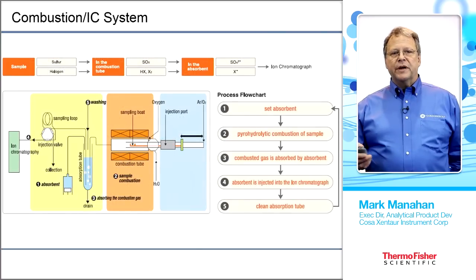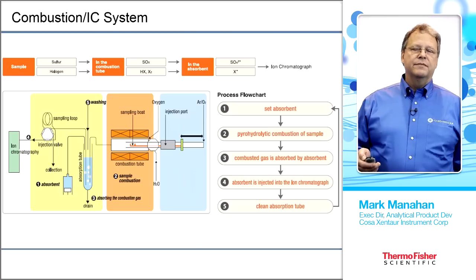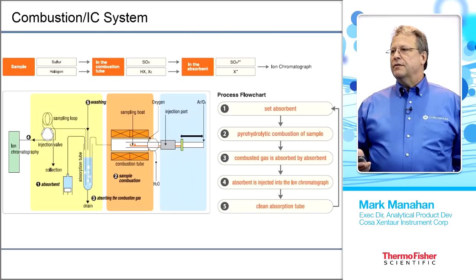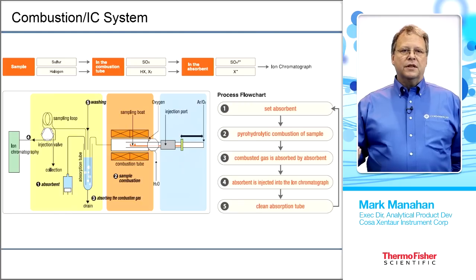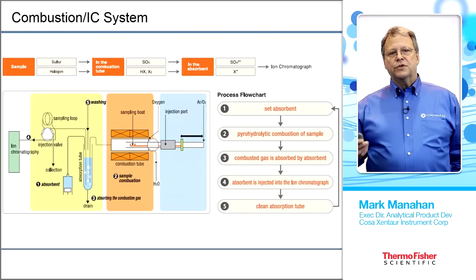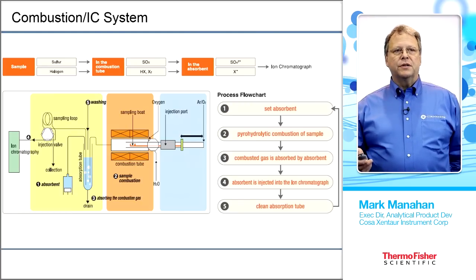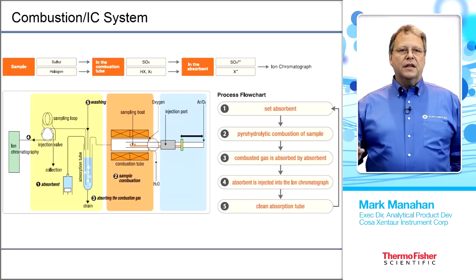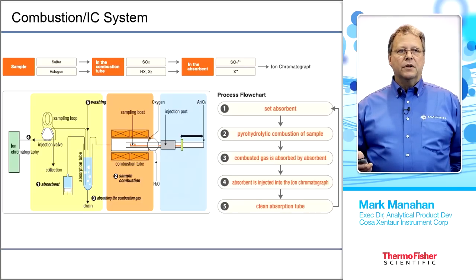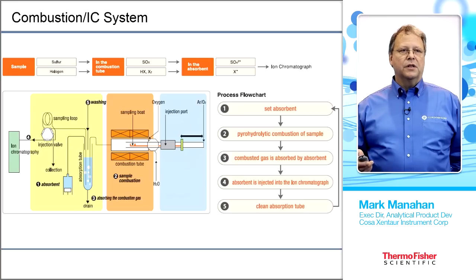Here is a basic block diagram of combustion IC: you have the sample introduction boat, then the furnace, then the gas absorption unit that absorbs the byproducts of combustion prior to injection on the IC, and then the IC itself — most popularly the ICS-2100, although any IC from the Thermo Dionex line can be used.